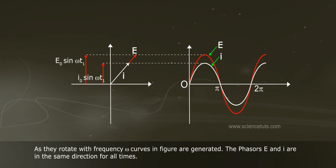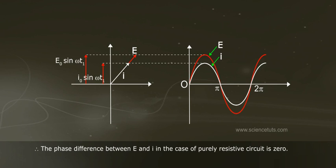The phasors E and I are in the same direction for all times. Therefore, the phase difference between E and I in the case of purely resistive circuit is zero.